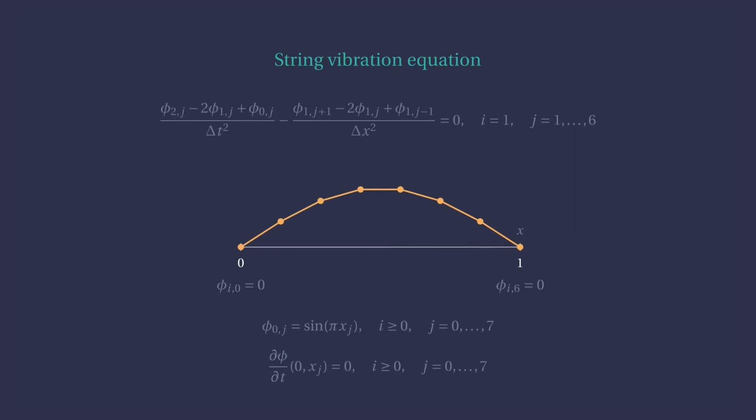At first sight, it seems like it. Our equation is asking for the values of phi at three different time instants: i equals zero, one and two. From the initial conditions we know phi at i equals zero. But we should also know phi at i equals one. How can we fix this? Well, we have still not used the second initial condition connected to the initial velocity of the string.